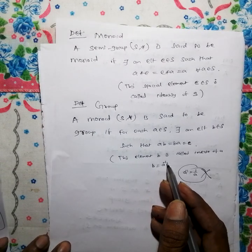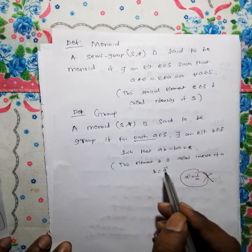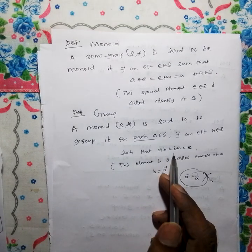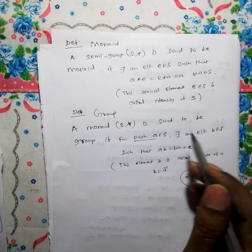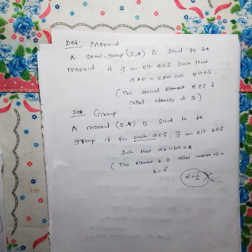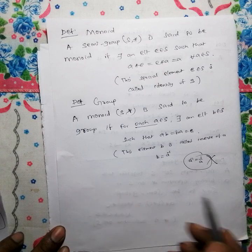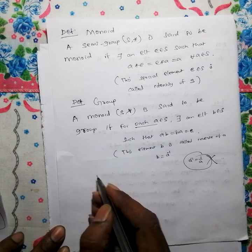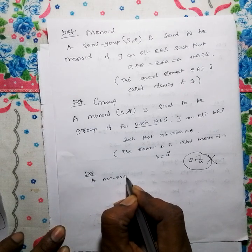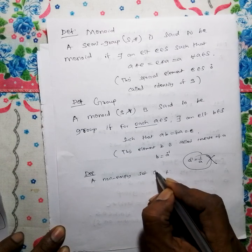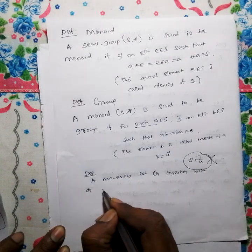So B is the inverse of A. If a monoid is a group, then for every element there is an inverse element in the set. The monoid is a group. A set G together with a binary operation star on G forms a group.